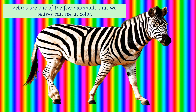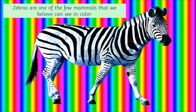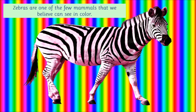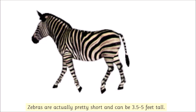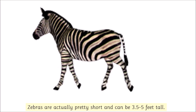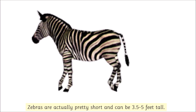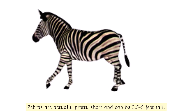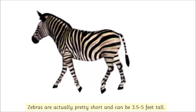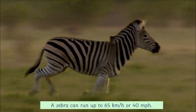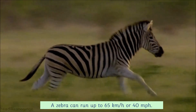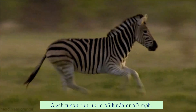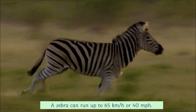Zebras are one of the few mammals that we believe can see in color. Zebras are actually pretty short and can be 3.5 to 5 feet tall. A zebra can run up to 65 kilometers per hour, or 40 miles per hour.